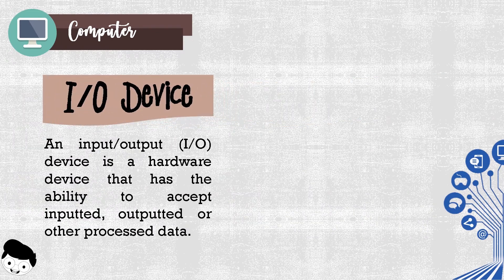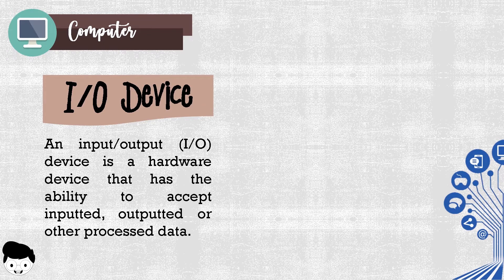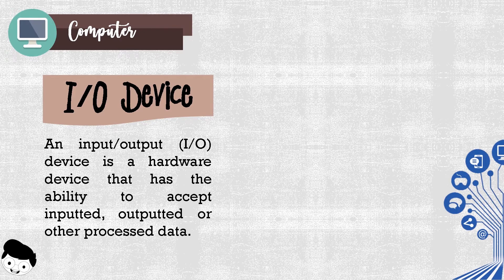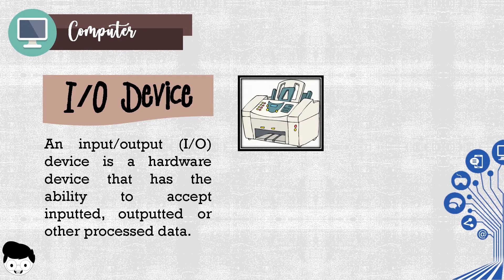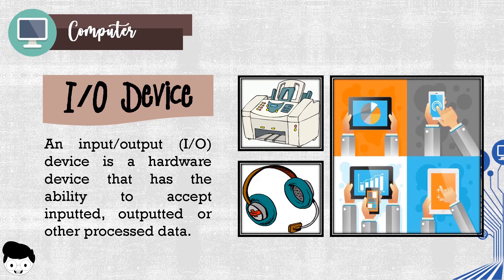Input/output device. An I/O device is a hardware device that has the ability to accept inputted, outputted, or other processed data. It also can acquire respective media data as input sent to a computer, or send computer data to storage media as storage output. Examples of I/O devices: all-in-one printer, headphones, and mobile devices.